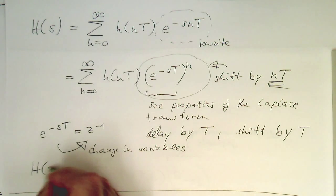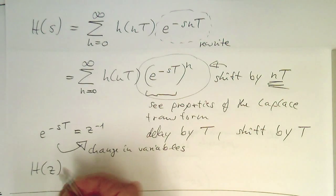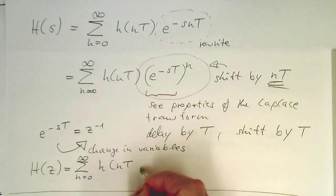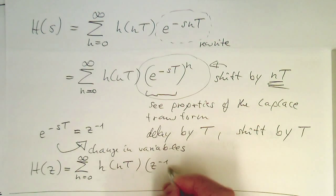And then, we call this H(z). And then, this runs here from n equals zero to infinity. And then, h(nT), z^(-1) to the n.